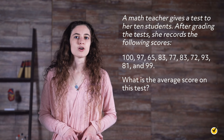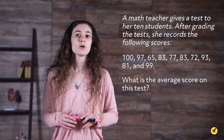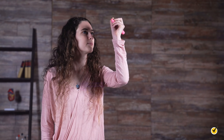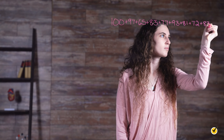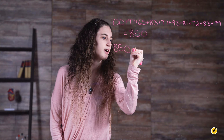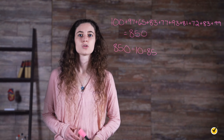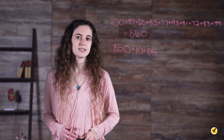Remember, the average is found by adding all the scores up and then dividing by the total number of students. So our first step is to add all our scores up. Then we divide 850 by the total number of students, which is 10. 850 divided by 10 is equal to 85, so the average score on the test is 85.